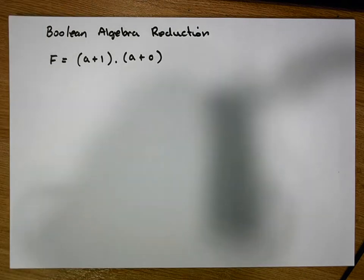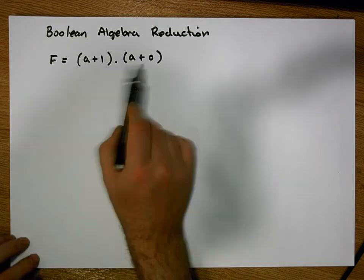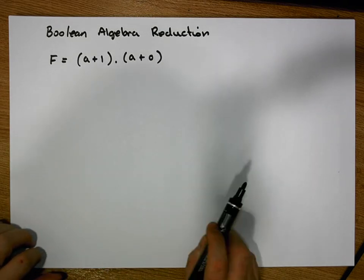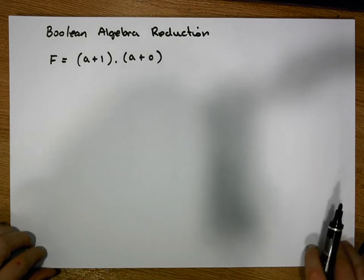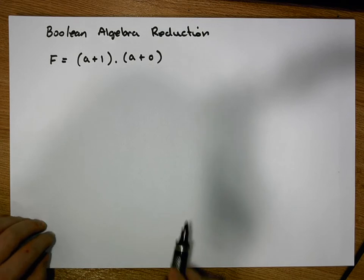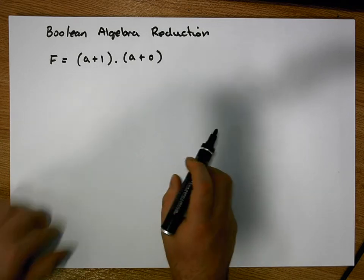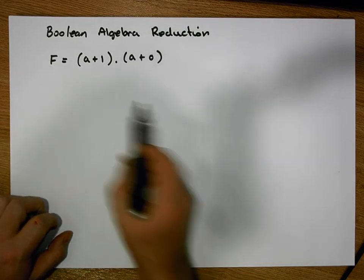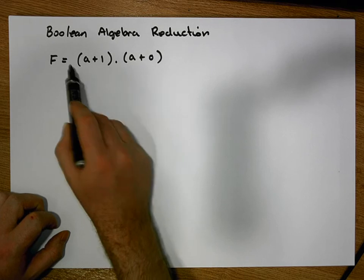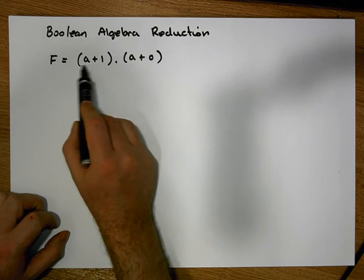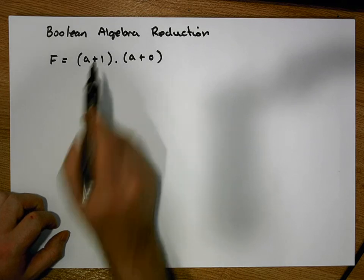What we want to consider is how to solve or reduce this particular function. There are many ways that we could do this. The first technique we could consider is to look at what's inside the brackets on the left-hand side, which is a OR'd with 1.